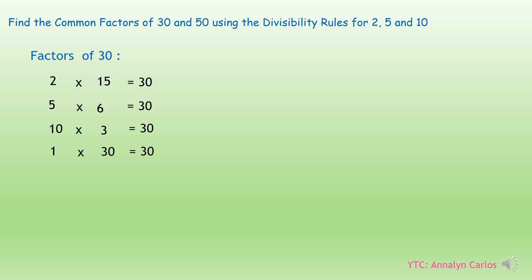All we have to do is write down the factors of 30 from the smallest number to the greatest number. So we have 1, 2, 3, 5, 6, 10, 15, and 30. These numbers are the factors of 30.